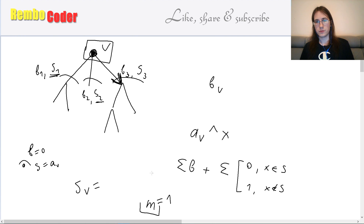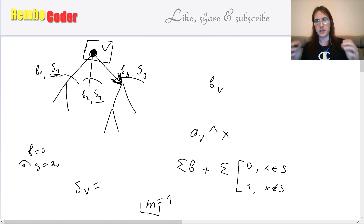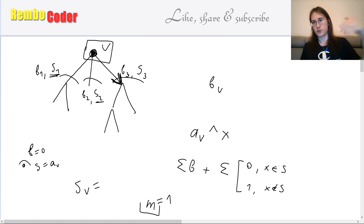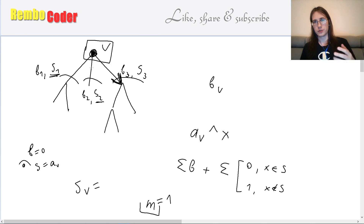There is one remaining problem for the m=1 case when we unite all sets: we also need to XOR all values by a_v, which would be slow to do naively. Instead, we store each set with an extra 'shift' value meaning every element in the set is implicitly XORed by this shift. To XOR all elements by some X, we simply XOR the shift by X — making this O(1).